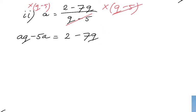And then I follow the same strategy, the same approach as my previous question, where I put my terms with Q on the left side. So I have AQ plus 7Q equals 2 plus 5A.